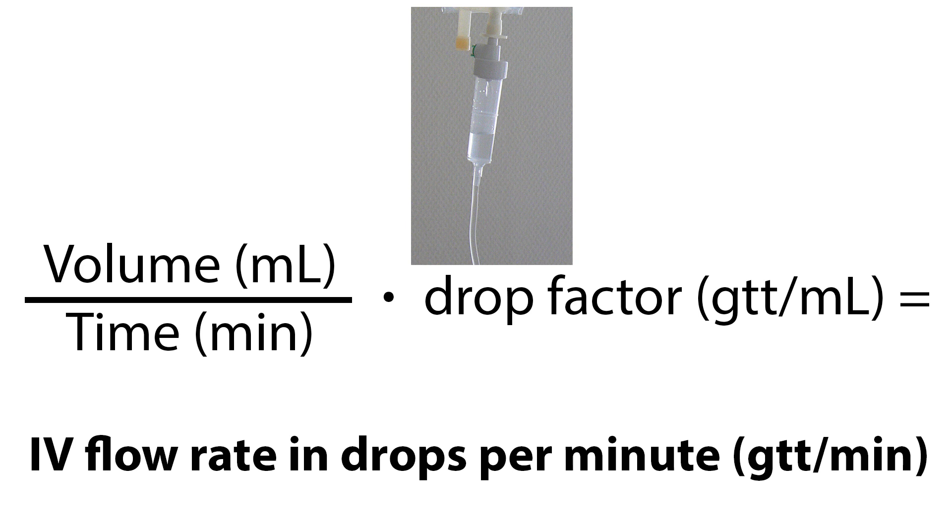To calculate the drops per minute, the drop factor is needed. The formula for calculating the IV flow rate or drip rate is total volume in milliliters divided by time in minutes, multiplied by the drop factor in drops per mL, which equals the IV flow rate in drops per minute.